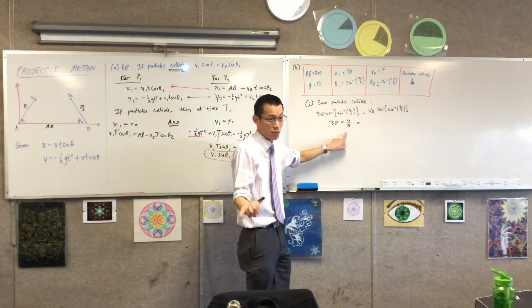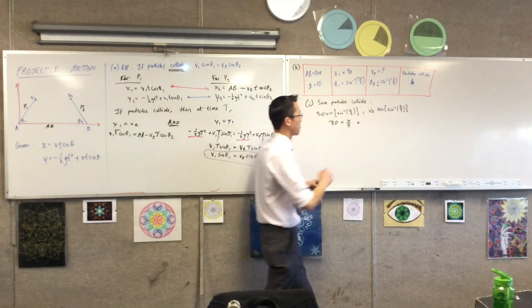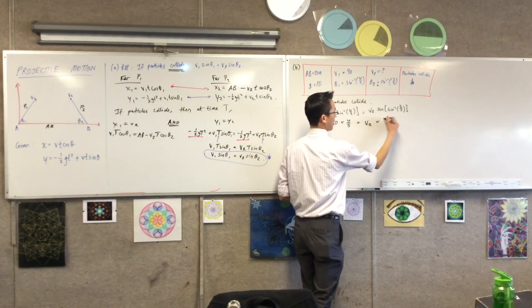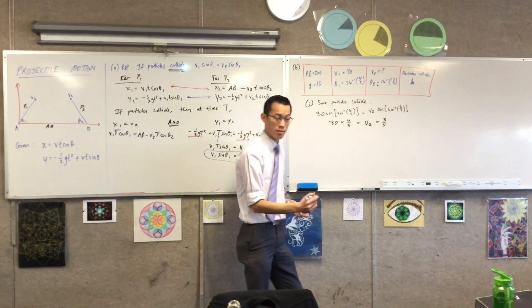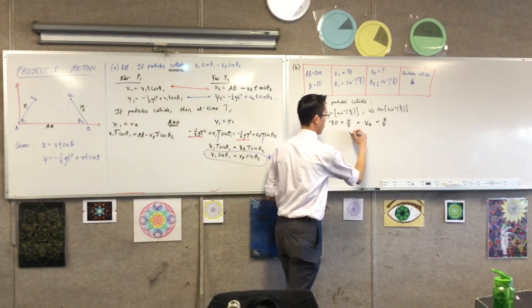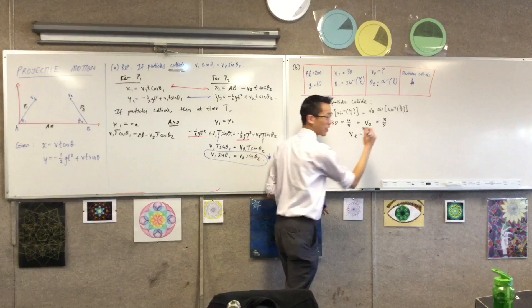You can just chuck that into your calculator if you really wanted to. It's just a number. In the same way, I've got v2 over here times three fifths. And if you solve, you rearrange, divide through, multiply through, you're going to get 40.